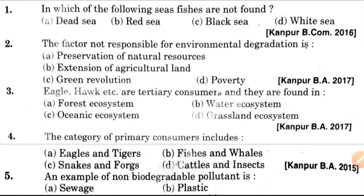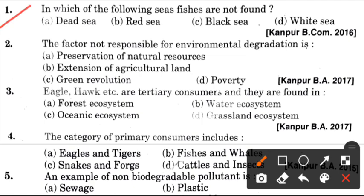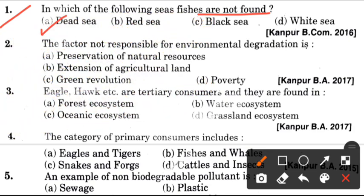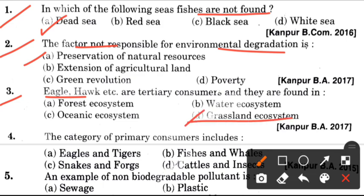Question number one: In which of the following seas are fishes not found? Answer is A, which is Dead Sea. Second question: The factor not responsible for environmental degradation is? Answer is A, which is Preservation of Natural Resources. Third question: Eagle, hawk, etc. are tertiary consumers and they are found in? Answer is D, which is Grassland Ecosystem.